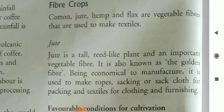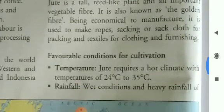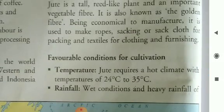Now let us see fiber crops. Cotton, jute, hemp and flax are vegetable fibers used to make textiles. Jute is a tall reed-like plant and an important vegetable fiber, also known as the golden fiber. Being economical to manufacture, it is used to make ropes, sacking cloth for packing, and textiles for clothing and furnishing.